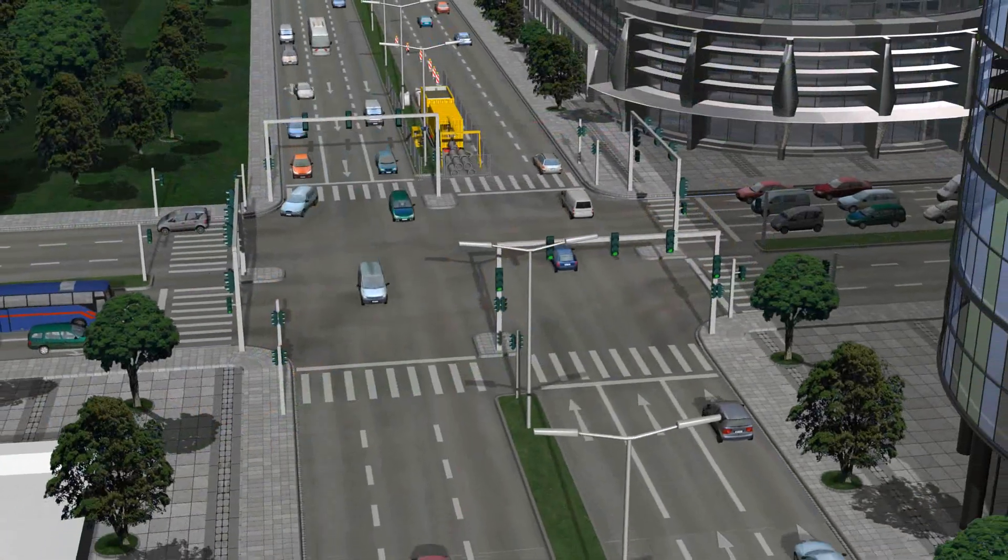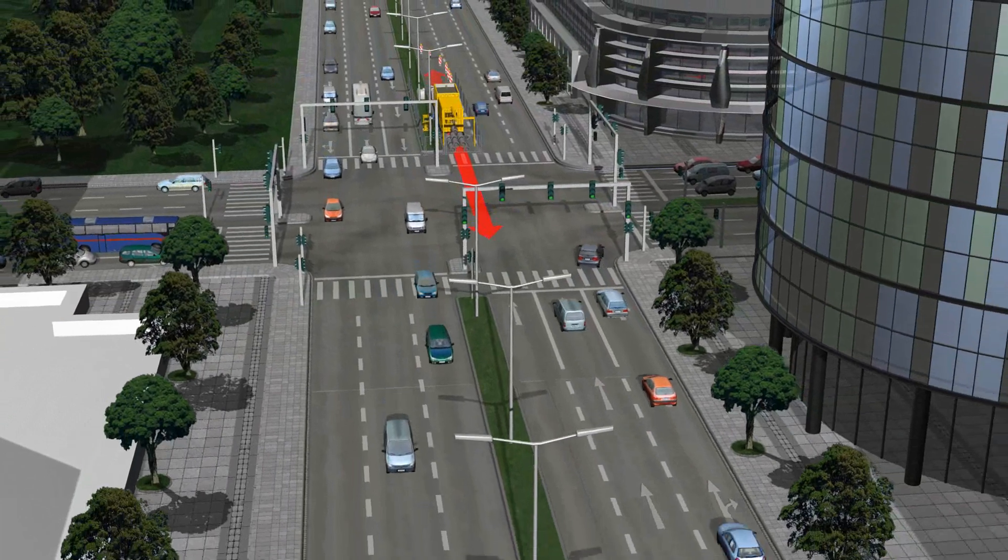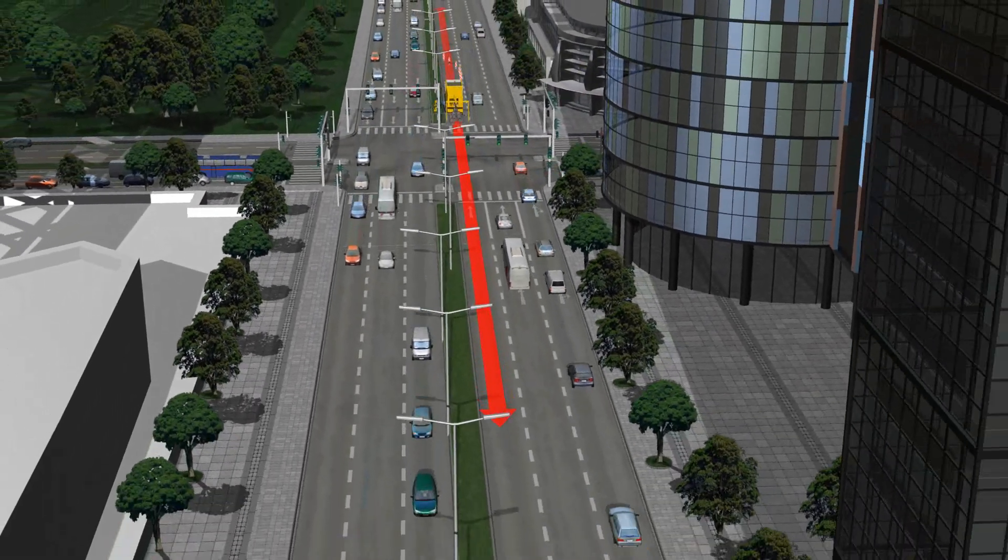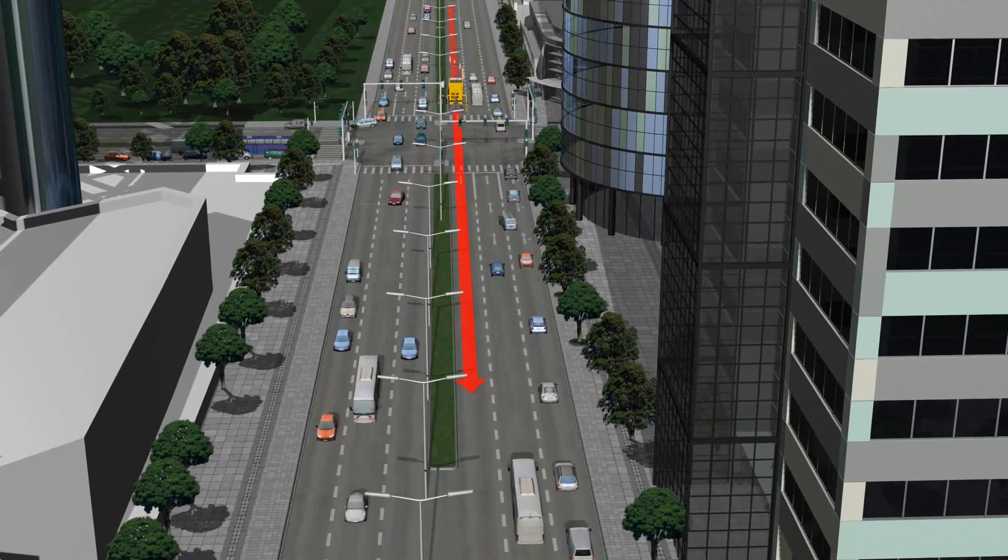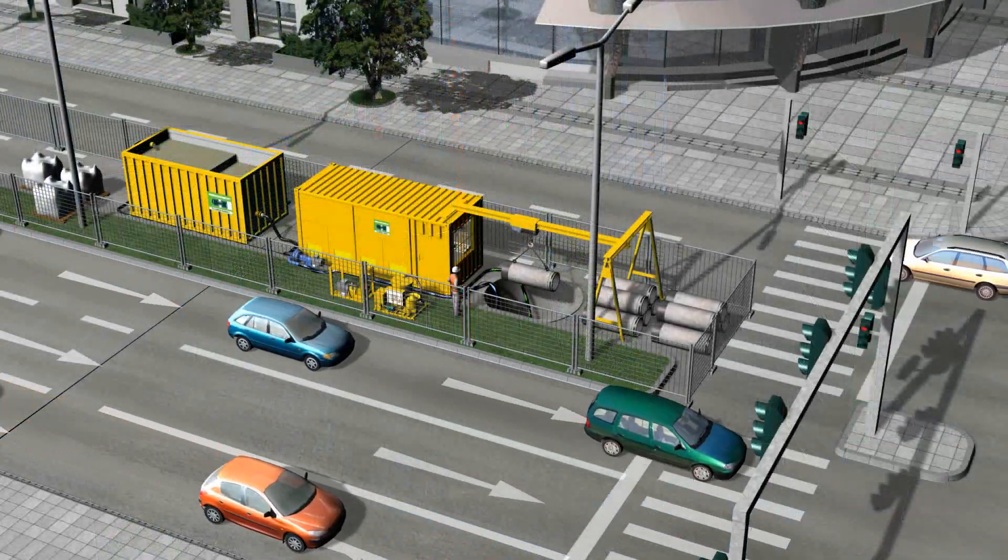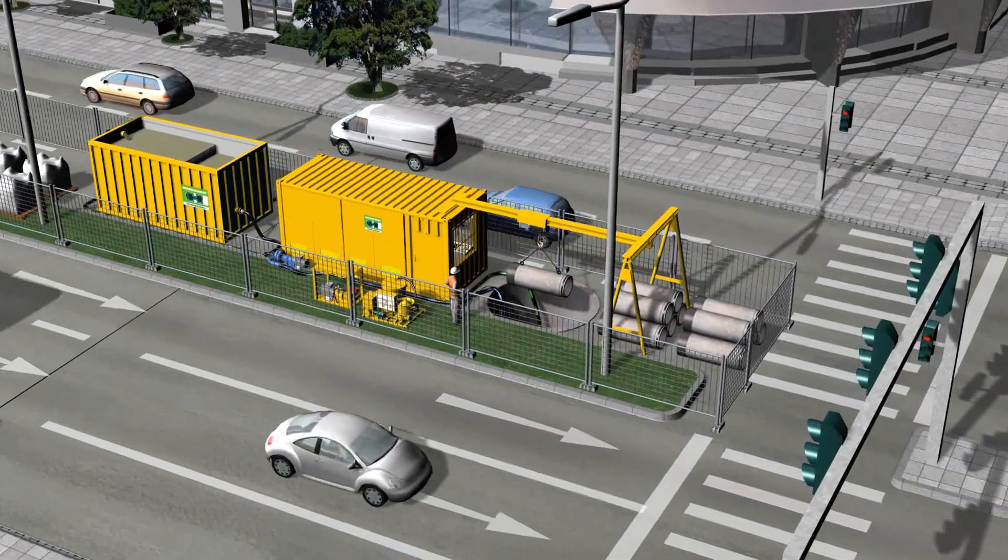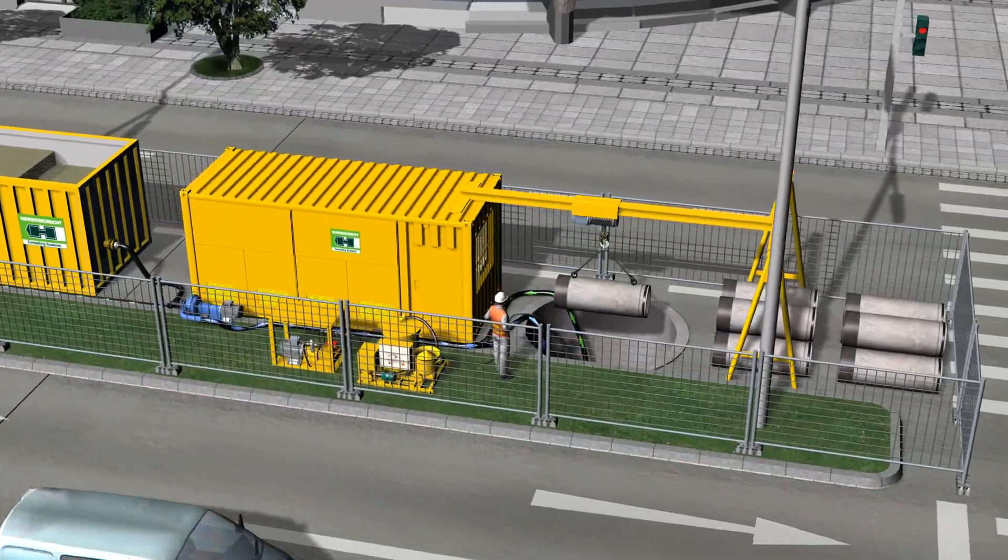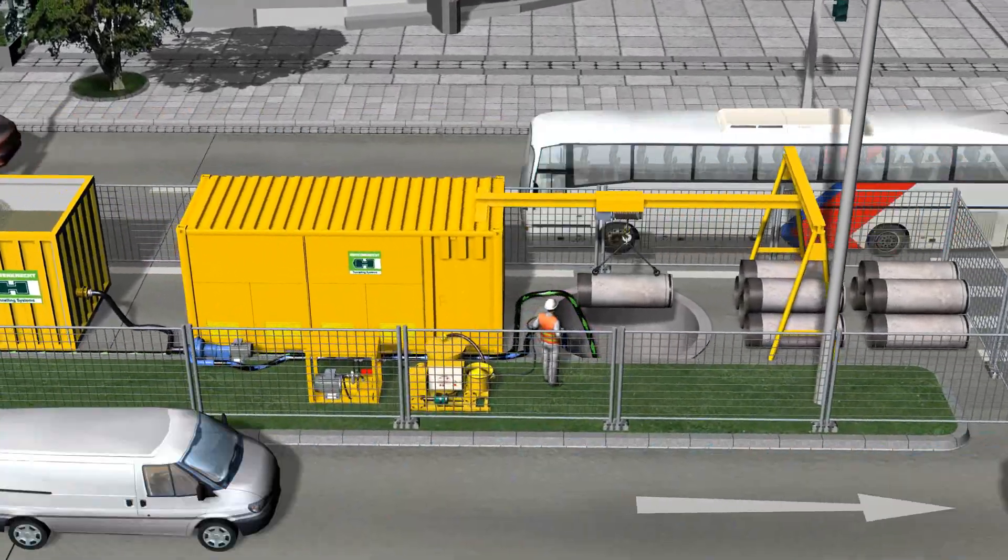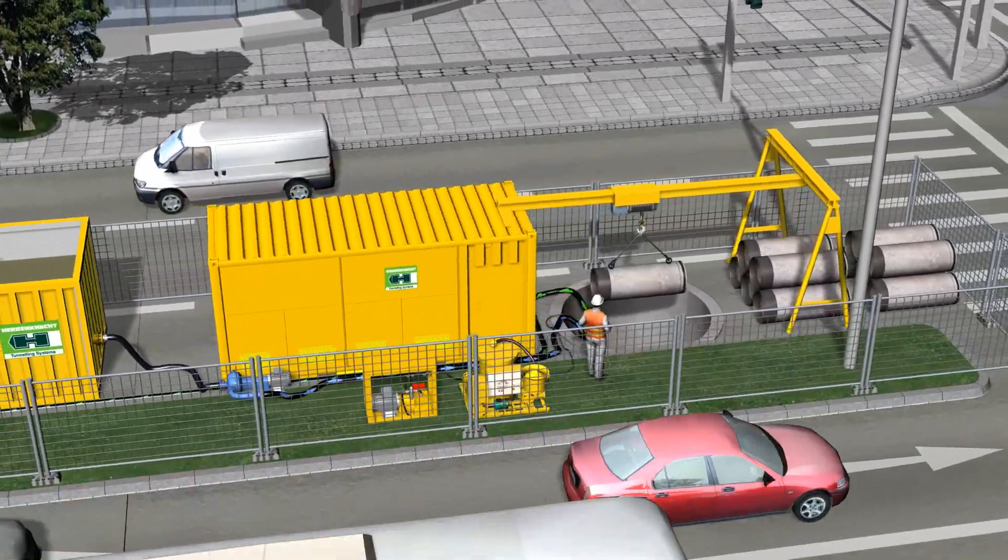In our example, 150 meters of sewer pipe are to be jacked from the launch shaft to the reception shaft. At the first stage, the area around the starting shaft is cordoned off to divert the traffic. Due to the compact design of the machine and the small diameter of the starting shaft, there will only be minor disruption to the traffic flow.